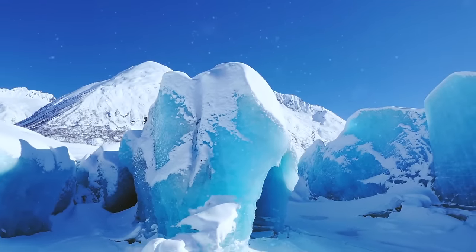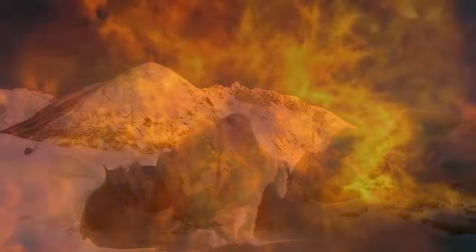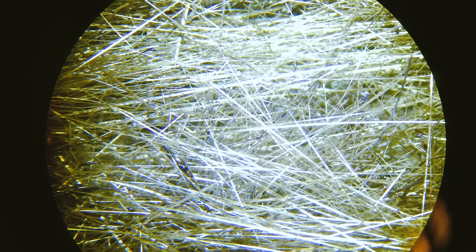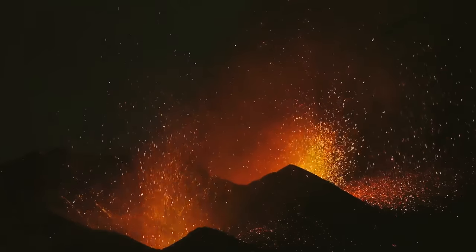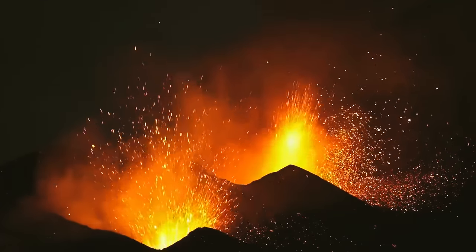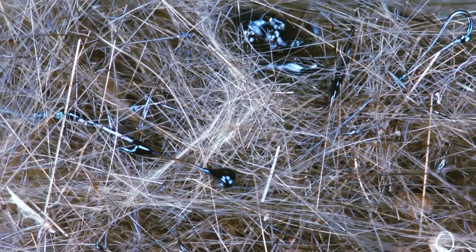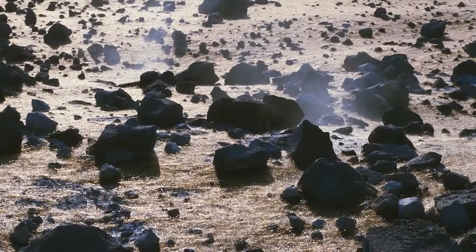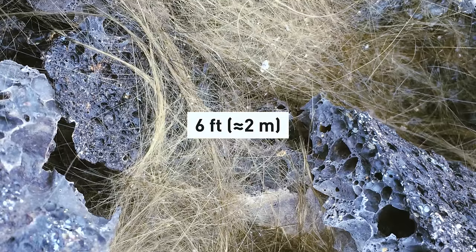But it's not only ice that creates amazingly beautiful things — fire can do it too. Look at Pele's hair. These thin threads may look golden and pretty, but they're very dangerous to pick up. The wind sometimes catches small droplets of lava coming from active volcanoes, and these droplets get carried miles away from the vent, stretched into super-thin glass wires also called hair lava. Some strands can be as long as 6 feet.